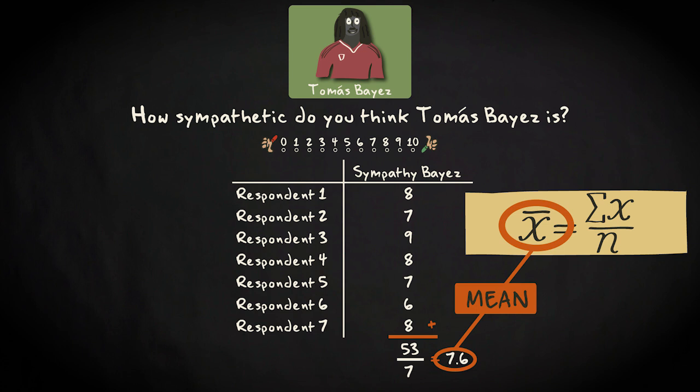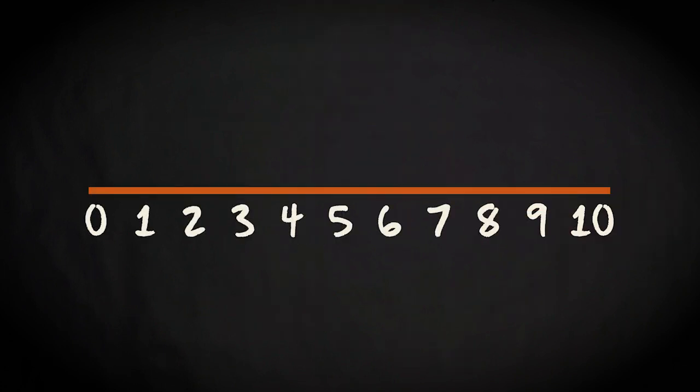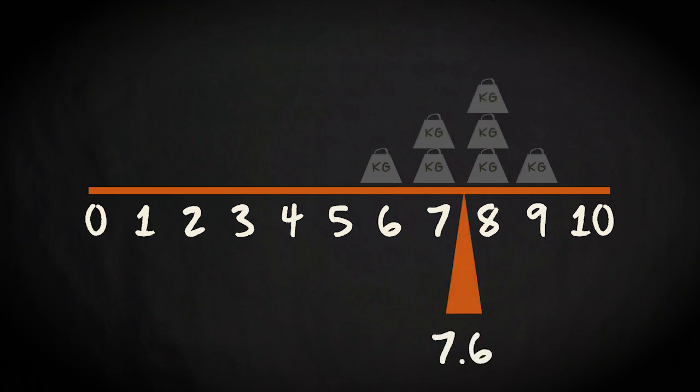You can think of the mean as the balance point of your data. Imagine we would place weights on a balance, one for each observation. Then the mean is the point on the balance where the total weight on the one side exactly equals the weight on the other side.